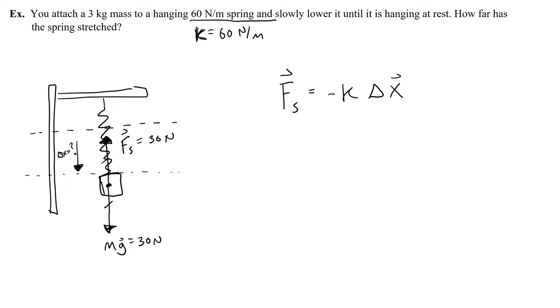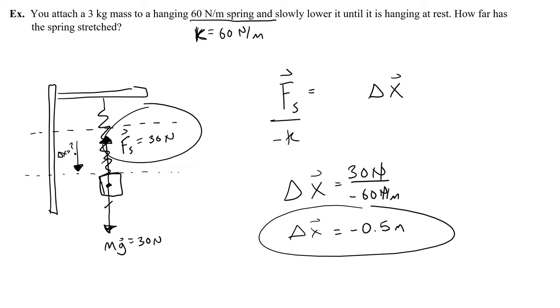Now I can use Hooke's Law to try and figure out delta x. To get delta x by itself, it's really easy, I just divide both sides by negative k. And delta x is going to be the force of the spring, which is 30 newtons, and then I divide that by negative k, so negative 60 newtons per meter. The newtons cancel out, I'm left with negative 0.5, and that's going to be meters. I have figured out how far the spring has been stretched from its original position, 0.5 meters down, so like 50 centimeters down from its original position, which is a pretty big number.